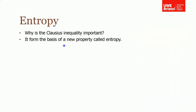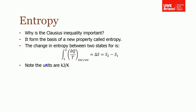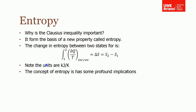So why is it important? It forms the basis of a new property called entropy. The definition is that if you integrate the change of heat with temperature — and this is important — for only an internally reversible system, then that is defined as the change in entropy, S2 minus S1. You can't do this for an irreversible heat engine; it's only true for an internally reversible engine. The units are kilojoules per kelvin, and entropy has some quite profound implications.